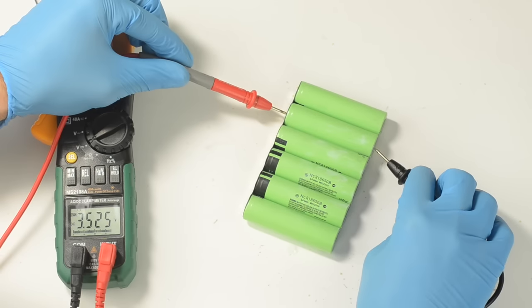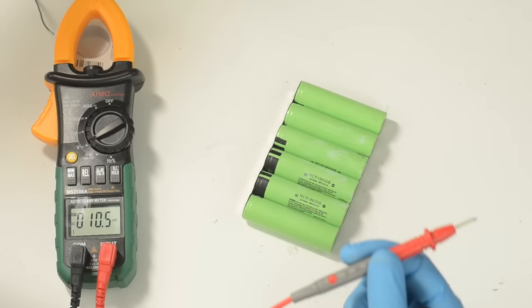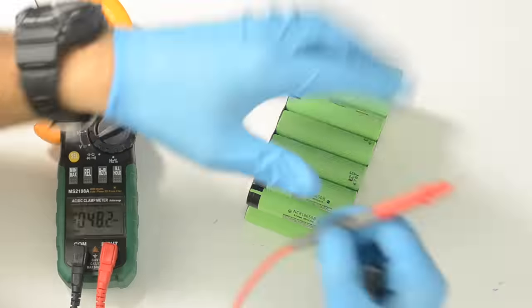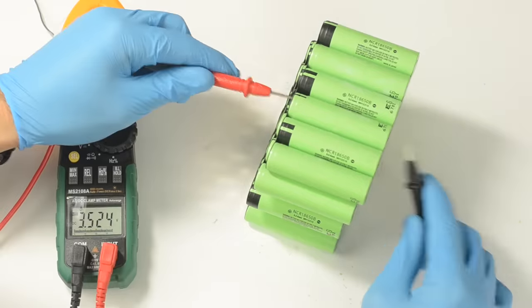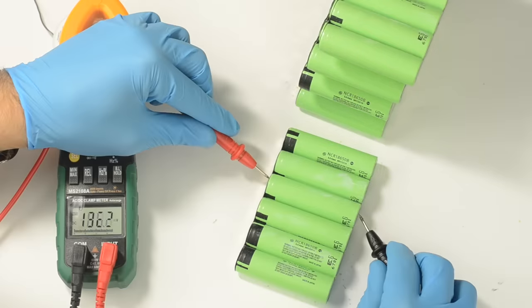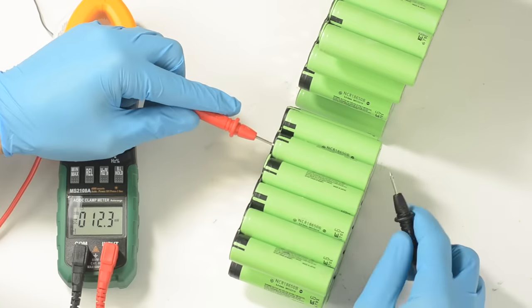Now the first thing you're going to want to do is measure the voltage of all of your modules using a voltmeter. This will make sure that they're all the same voltage and that all of your modules are ready to go. It doesn't matter as much what the exact voltage is, just that they're all the same.